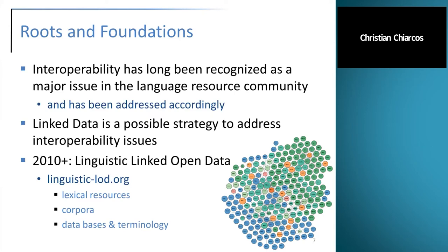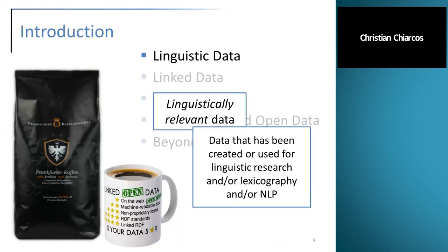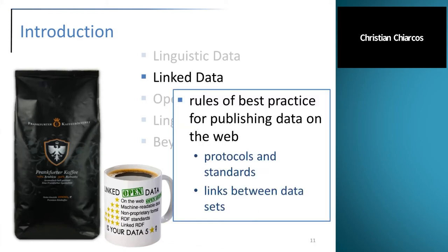What does linguistic data mean in this context? After a long discussion, we settled on something very broad: by linguistic data we mean linguistically relevant data — that is, data that has been created or used for linguistic research and/or lexicography. This also includes resources that are not strictly speaking language resources, but also general knowledge bases that have multilingual information, for example DBpedia.